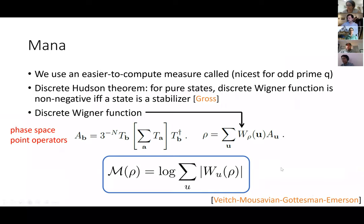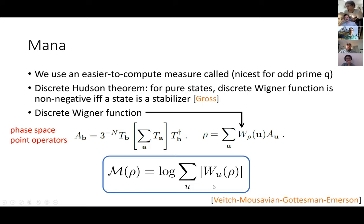Once you have this Wigner function — obtained by taking your quantum state and expanding it in the complete basis of these phase space point operators — you can compute the log negativity of this Wigner function, and that's the mana. That's it. It's also a magic monotone, and it gives an upper bound on the distillable magic. This is more computable: if you have access to this Wigner function, you can directly calculate this sum, though it still requires summing up a large number of numbers, which is so far prohibitive for us for large systems. We can compute this for up to about a seven or eight qutrit subsystem in a large many-qutrit system.